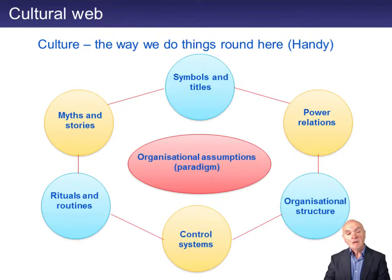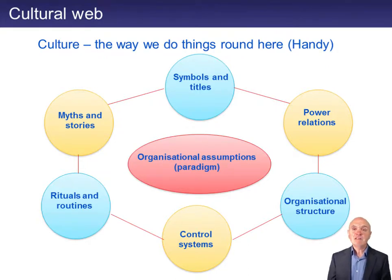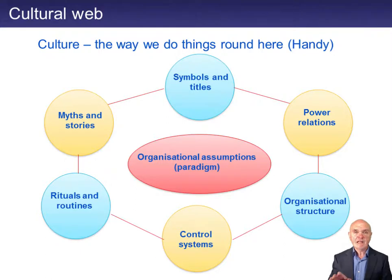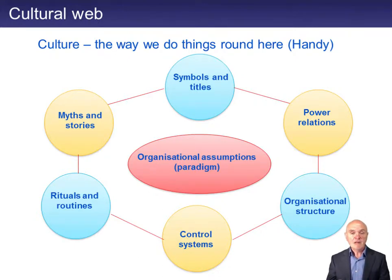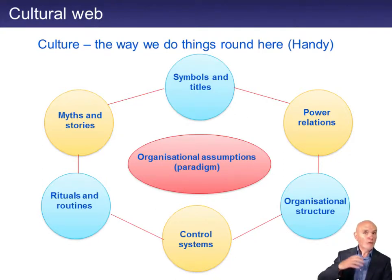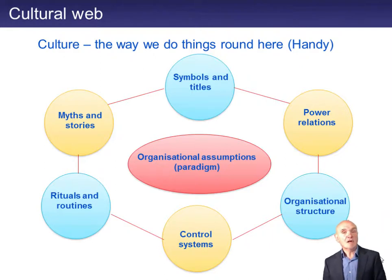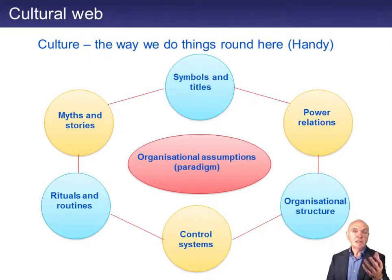Control systems: if your generic strategy was cost leadership, you're probably going to have very fierce control over costs — scrutinising expense claim forms, clocking people in and out of the factory, only paying them for hours worked, because you live or die by low costs. In an organisation whose generic strategy is more differentiation, your success is more about pleasing the customer, and you probably don't watch costs as much — you don't mind if costs go up a little, provided the customer is pleased and willing to pay a good price.